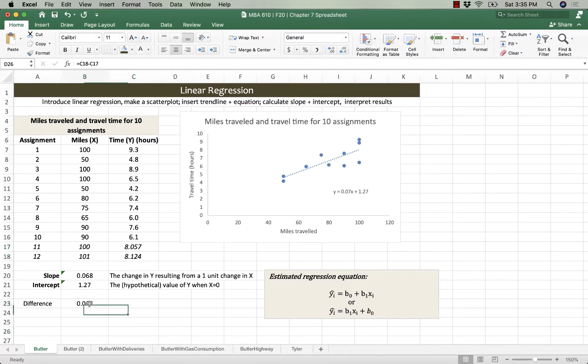The difference is 0.068, equal to that slope. So a 1-unit change in x from 100 to 101 causes y to change by 0.068, which is the amount of that slope. And that's why we say that the slope is the change in y resulting from a 1-unit change in x. Each time you increase the number of miles you travel by 1, you should be adding 0.068 hours to your trip, at least as an estimate.